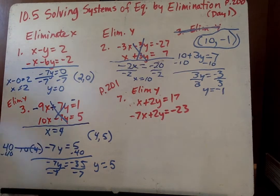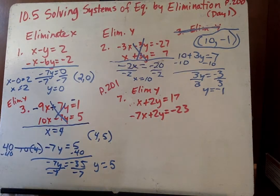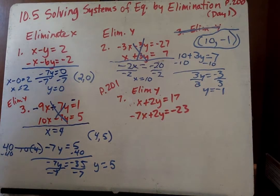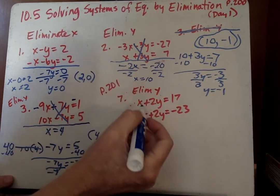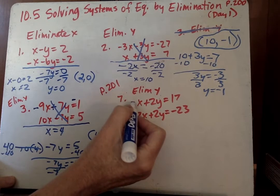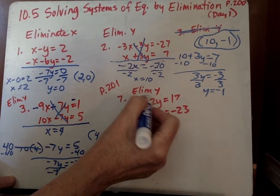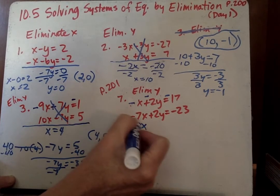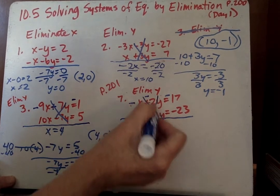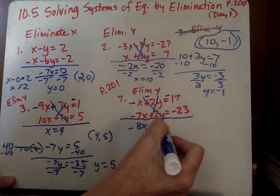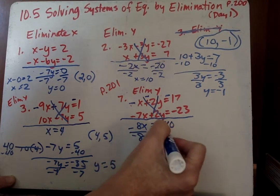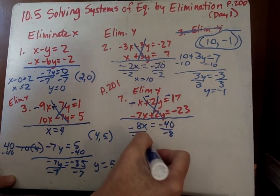All right, let's go on to page 201 where we have number 7 and it says eliminate y. So again, I'm going to multiply one of them by a negative 1. So I'm going to go ahead and take this top one, multiply this by a negative 1. That means I just change all the signs. So I get negative 8x and the y's go away because it's negative 2y plus positive 2y equals negative 40. Divide by negative 8, x equals 5.